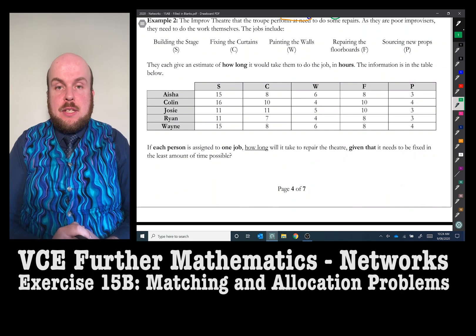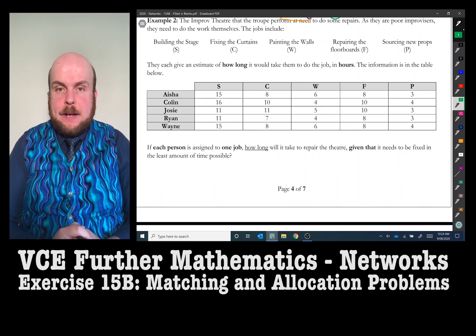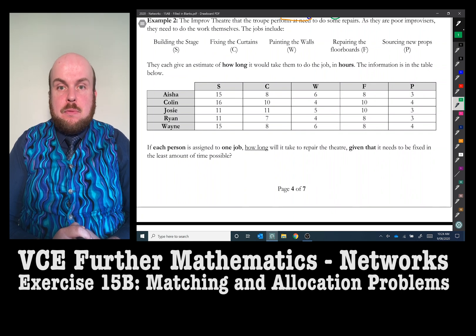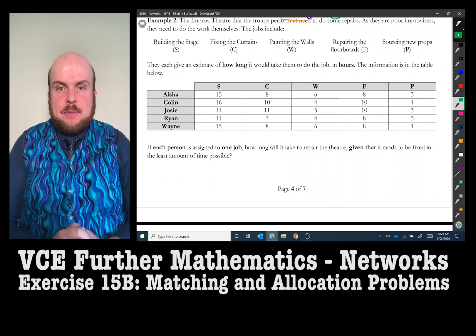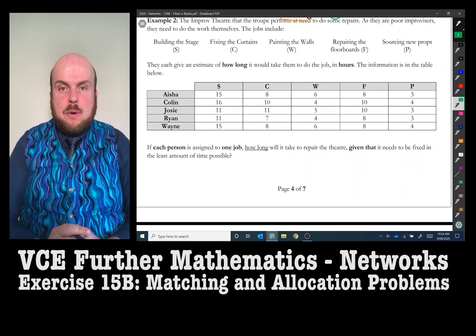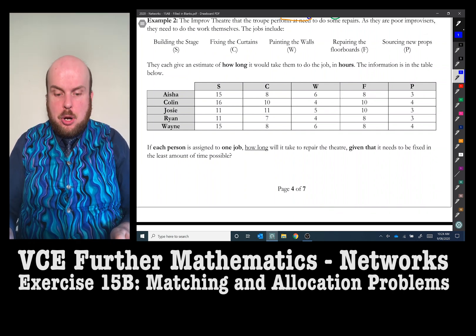So there are two methods of doing this. One, you can look at the table and use some logic. And two, there's the use of the Hungarian algorithm. We'll go by logic first. Let's have a look at each of the columns. I'm going to suggest that you want to go and have a look at who takes the least amount of time for each job.